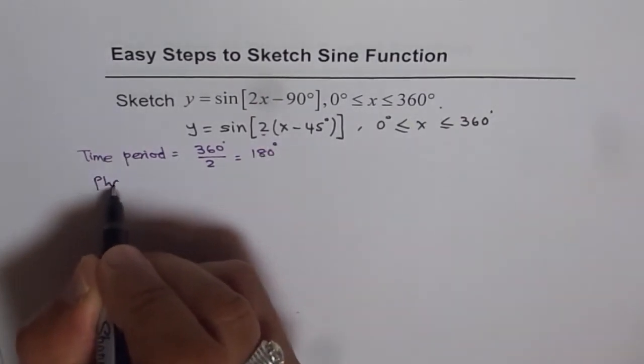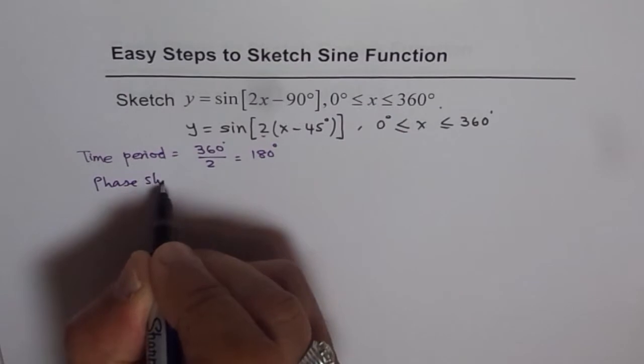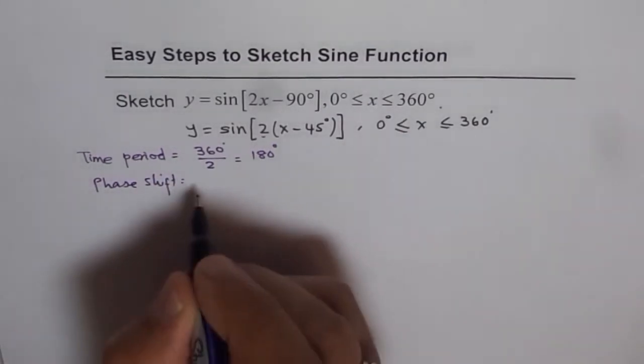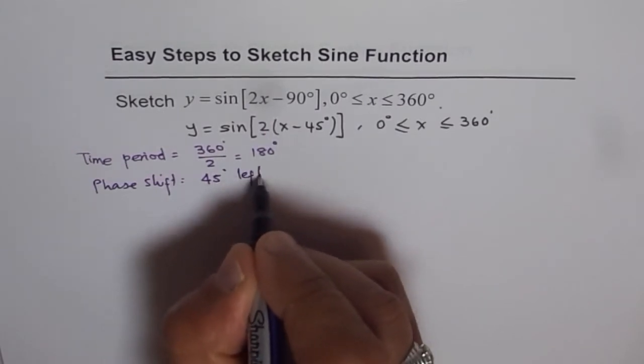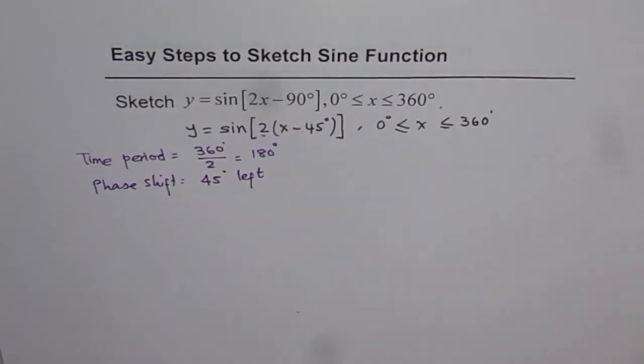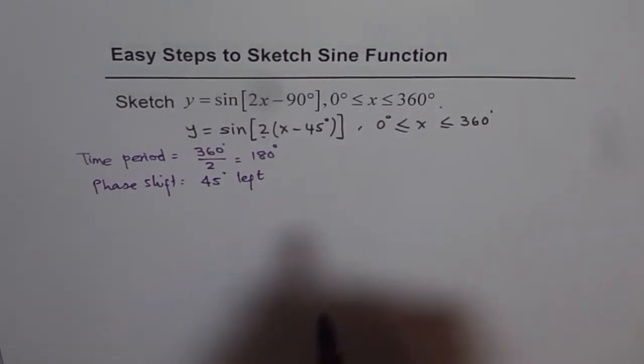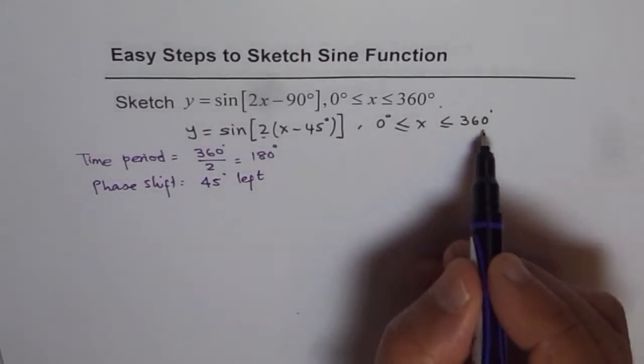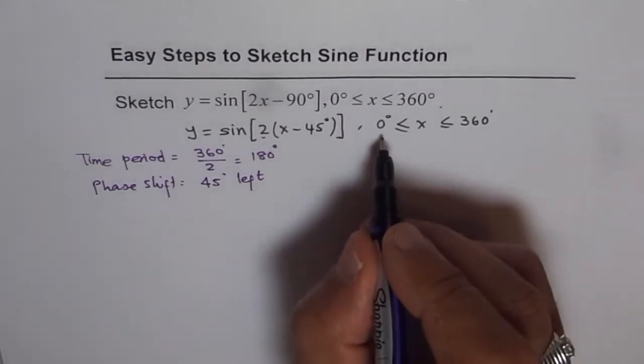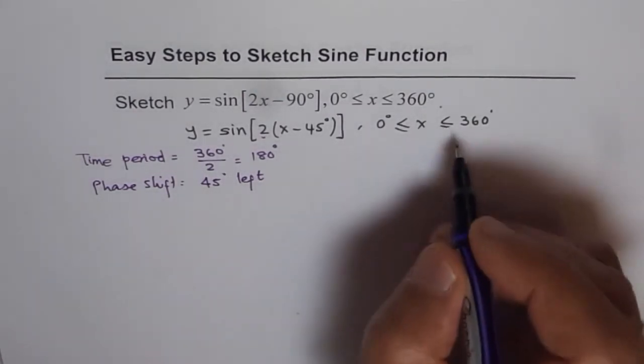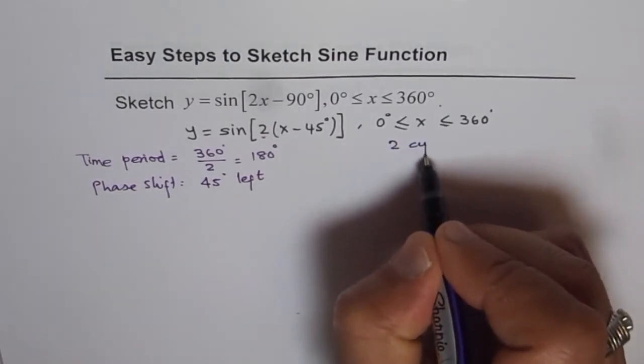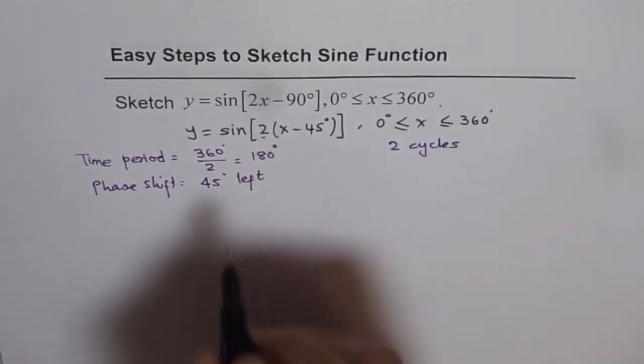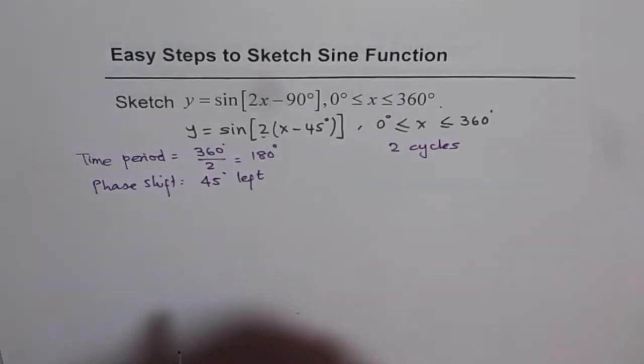And the phase shift is 45 degrees left or we can say minus 45 degrees. So these are the two things that are known to us. So within 0 to 360 degrees we expect 2 cycles. This is what we expect since the time period is 180.